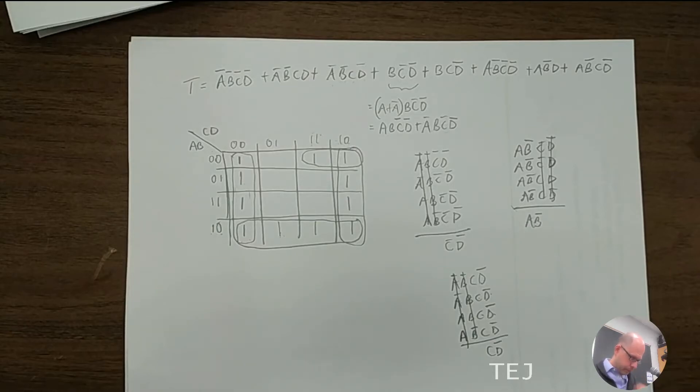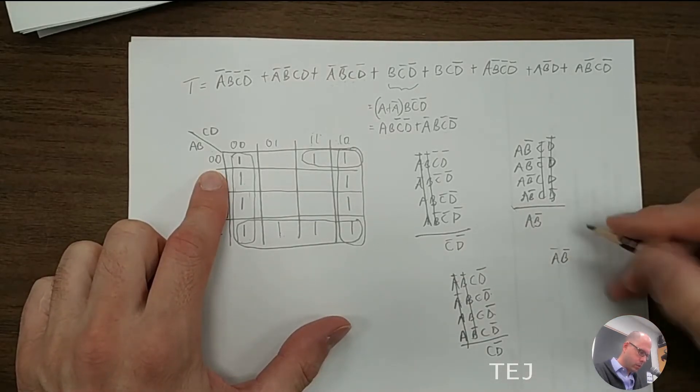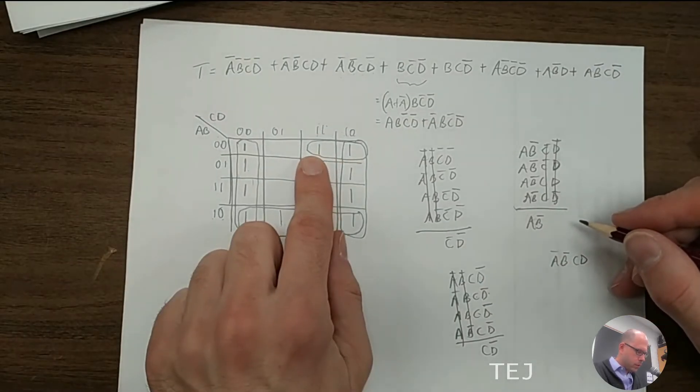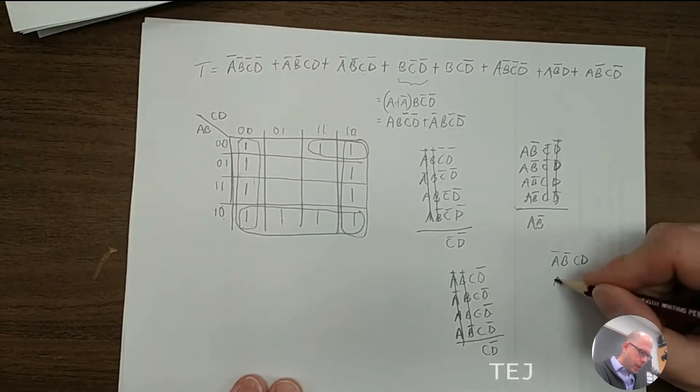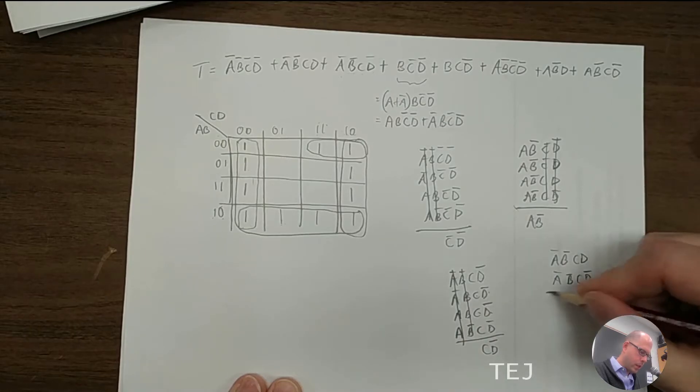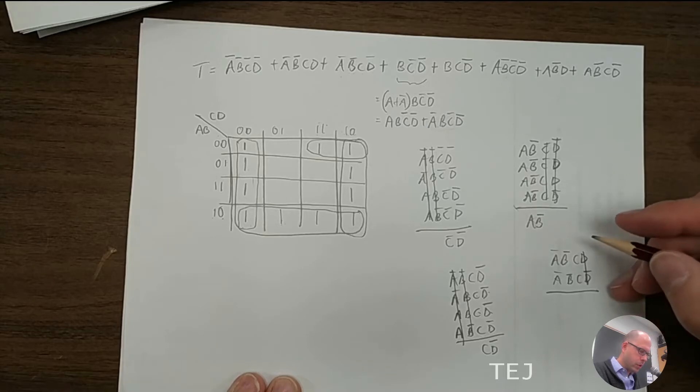One last grouping. Only two. a naught, b naught, c, d. So it's these two that we're looking at here. So that's the first one. The second one, a naught, b naught, c, d naught. And only one thing cancels because we're only using two terms.